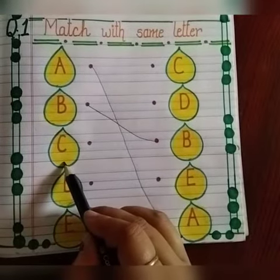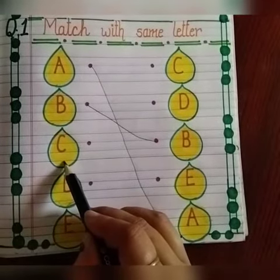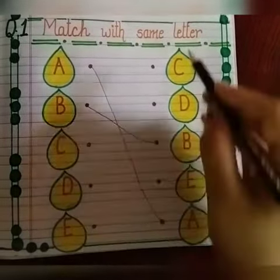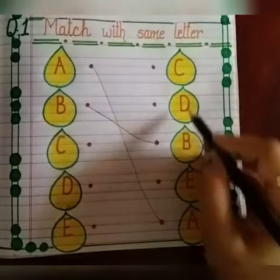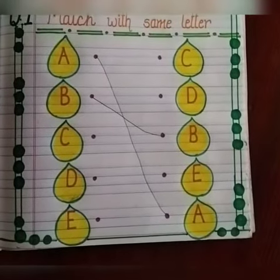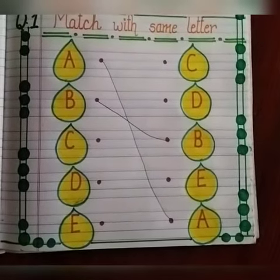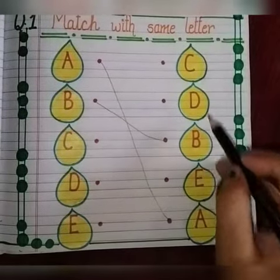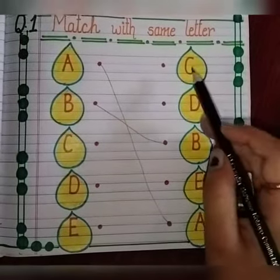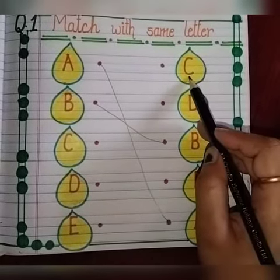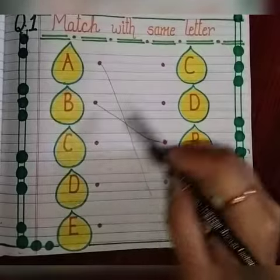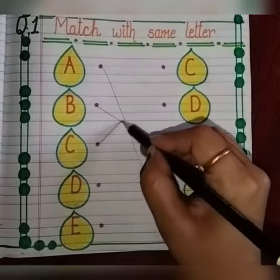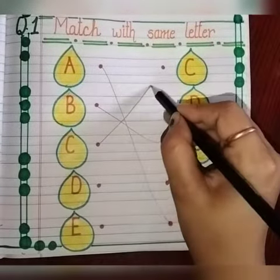Which letter is this? It is C. Now find letter C in this row. C says K. Where is letter C? Yes. Match with it. C says K.